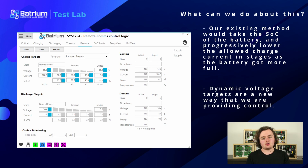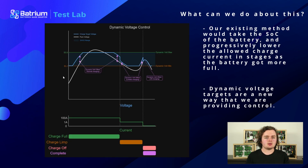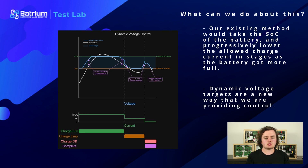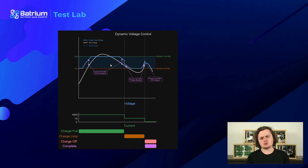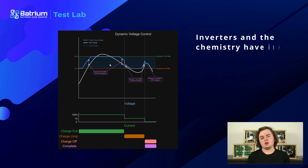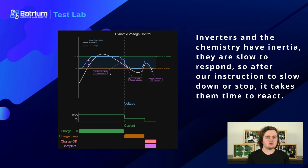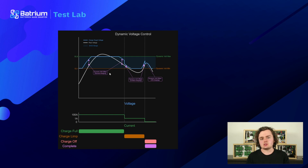Dynamic voltage targets are a new way to do it, and here's a diagram showing how it works. This routine is bound by two values — the dynamic volt min and dynamic volt max, which you can see in the software there. When the curve isn't anywhere near the target voltage it's clamped at the low value, and if it exceeds the maximum charge target it's clamped at the higher value. Inverters and the chemistry have inertia — they're slow to respond — so after instructions to slow down or stop it takes some time to react. This means cells can surge up in value at the top or bottom of charge, but it's only if it stays there that it warrants concern.